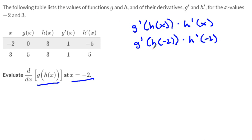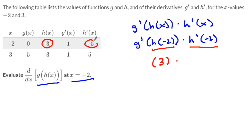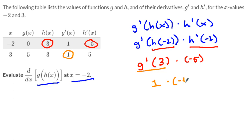Now I can go to my table. I look at what h of negative 2 is — h of negative 2 is equal to 3, so that equals 3. I'm looking for h prime of negative 2 — h prime of negative 2 is negative 5. But remember, I still have this g prime on the outside. What's g prime of 3? g prime of 3 is equal to 1. So 1 times negative 5 equals negative 5. And that is the answer to the derivative of this function using a table.